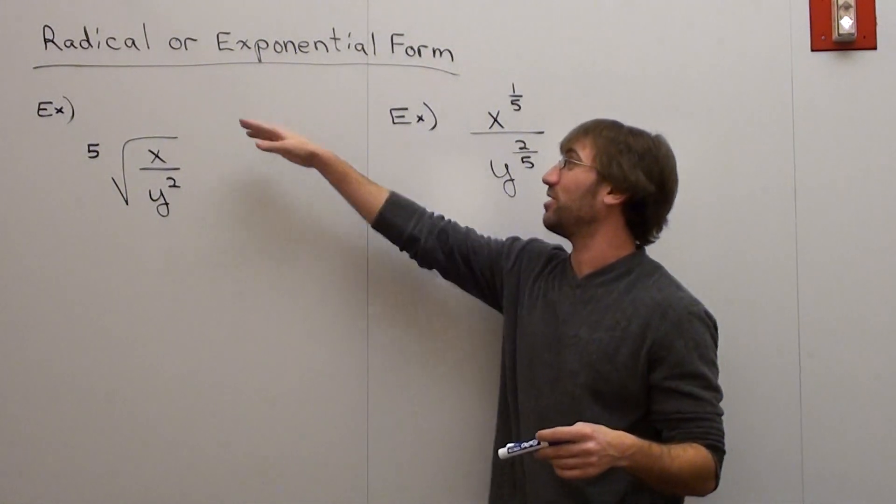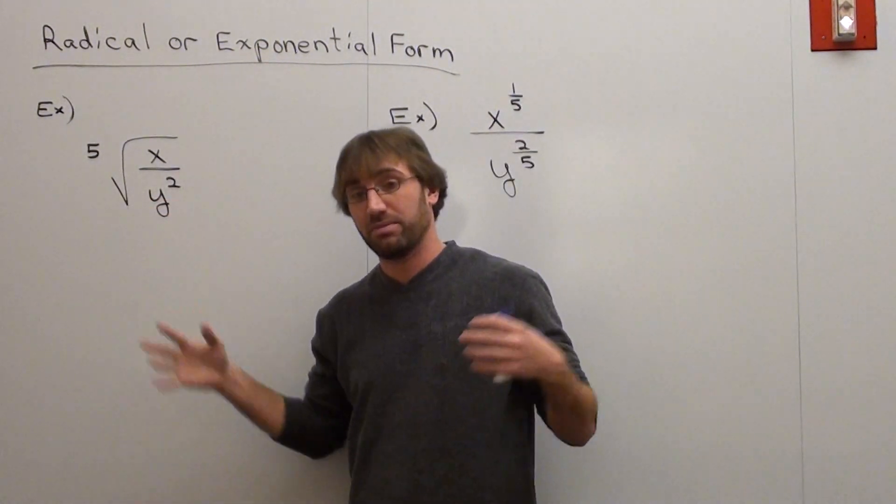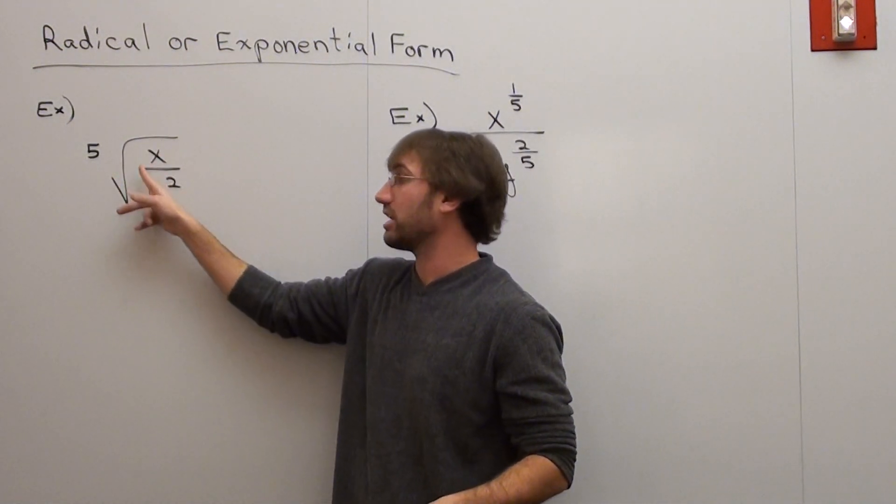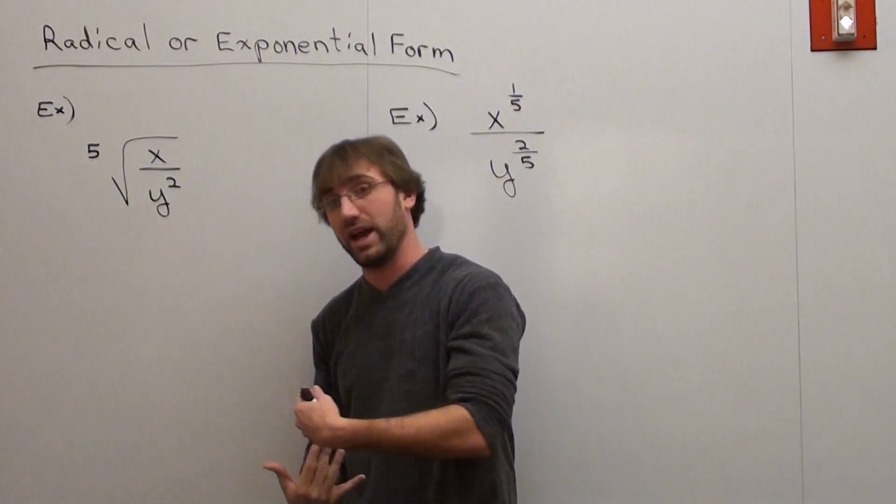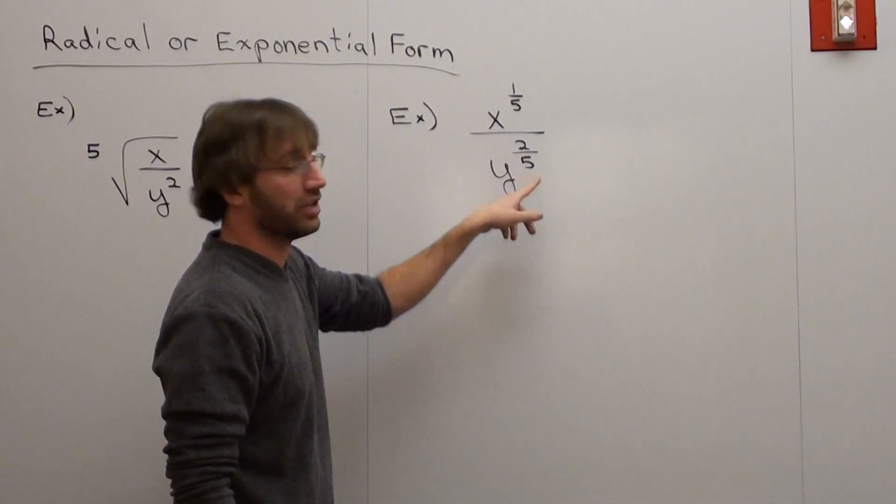Hello again. It's our second installment of radical or exponential form. Basically, what I did was I have the same problem out twice, and I'll go ahead and read it. I have the fifth root of x over y squared, and that's in radical form, and I have x to the one-fifth over y to the two-fifths.